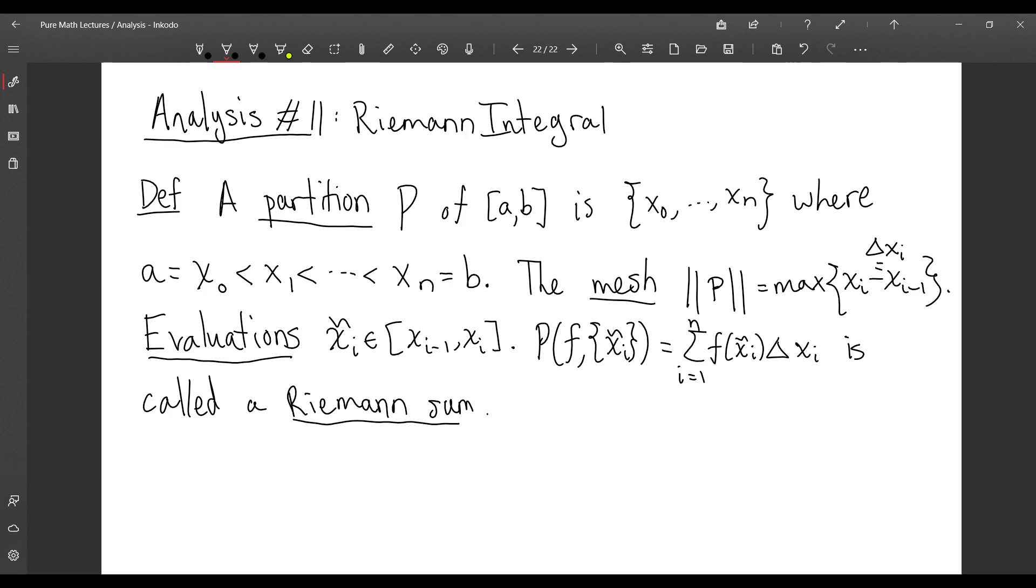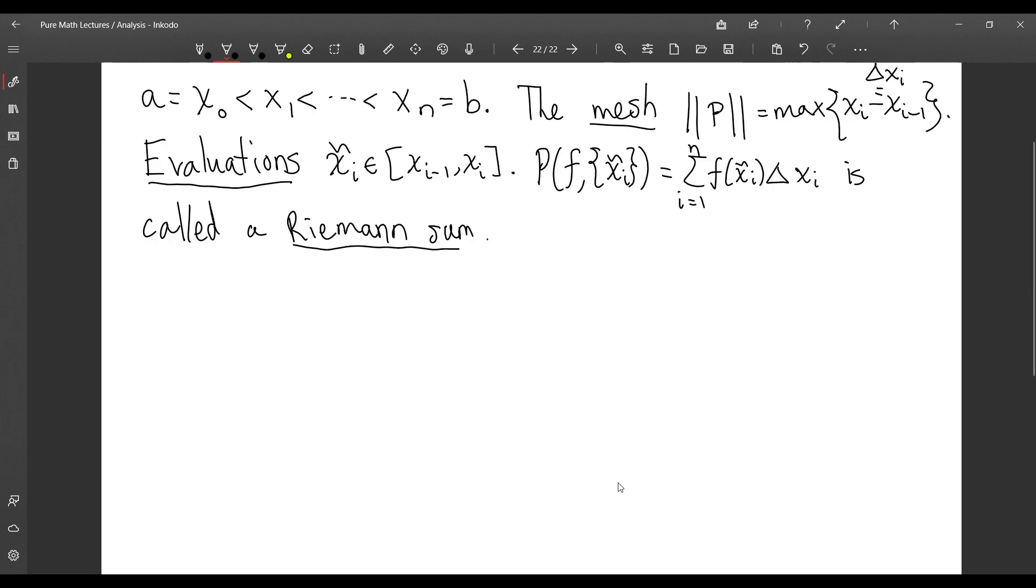So it's a Riemann sum of f with respect to the partition P and the choice of evaluation points. The next thing is now we are going to define the Riemann integral. Let f be a function, it need not be continuous, just a function on [a,b] mapping into the real numbers.